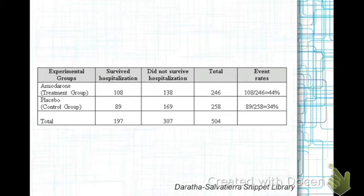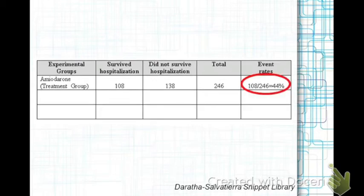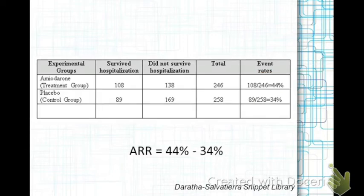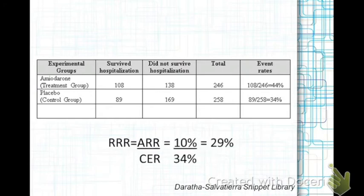ARR is the difference in the experimental event rate, 44%, and the control event rate, 34%. To determine RRR, divide ARR by the control event rate. In this example, RRR would allow researchers to report a 29% increase in hospitalization survival.